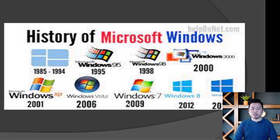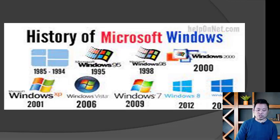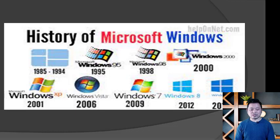This is the history of Microsoft Windows. Windows started in 1985. From 1985 to 1994, we had the Windows operating system. Then Windows 2000, and Windows XP in 2001.